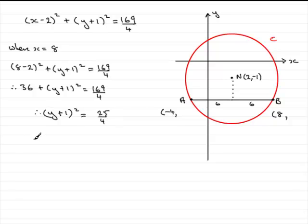Now all I need to do is square root both sides and that leaves me with y plus 1 equals the square root of 25 over 4. And we must remember not to forget the plus or minus. Square root of 25 over 4 is going to be 5 over 2. So you've got therefore y plus 1 equals plus or minus 5 over 2.